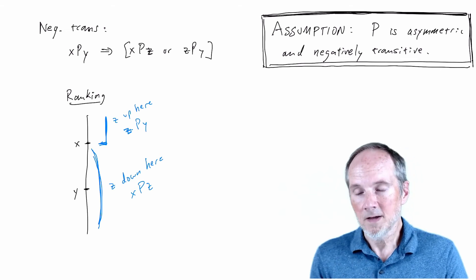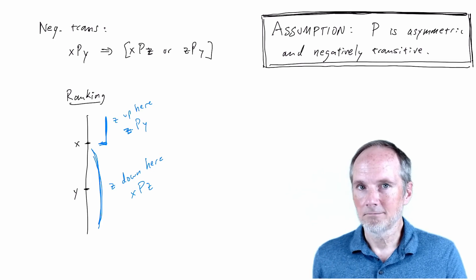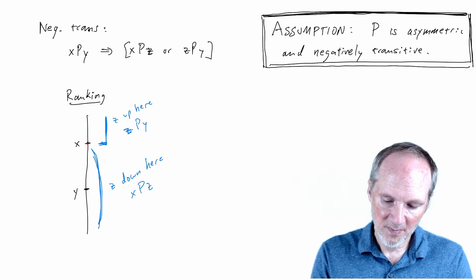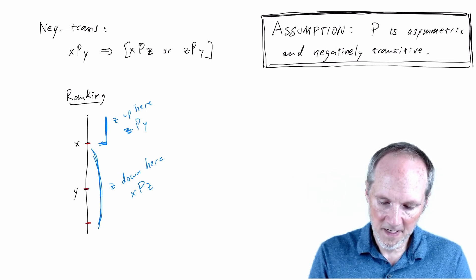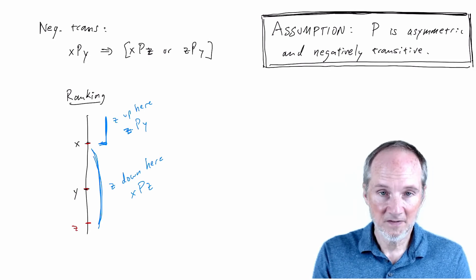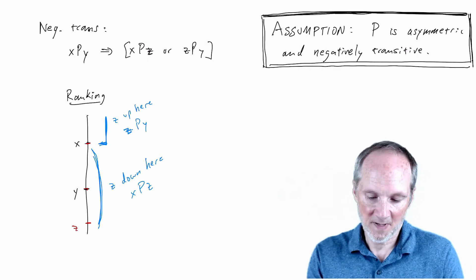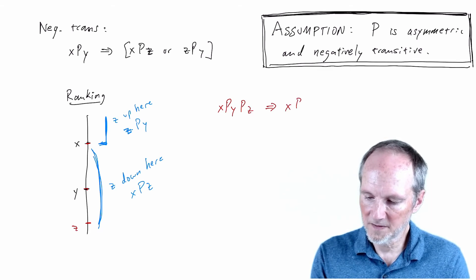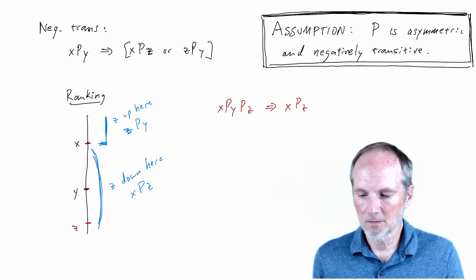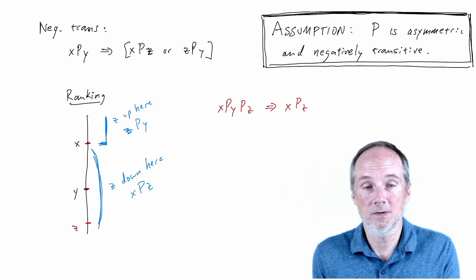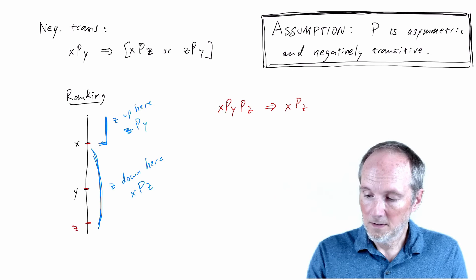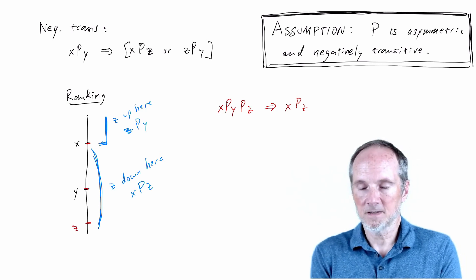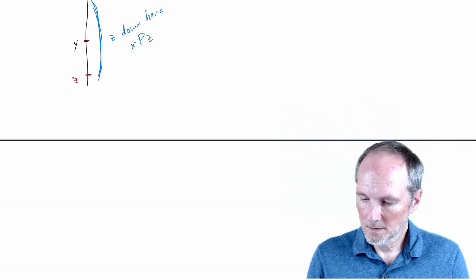You might be thinking: transitivity seems like a completely compelling property on its own. If x is above y and y is above z, clearly x is above z. So transitivity is something we want to assume too. It turns out that transitivity is redundant because it's actually implied by the conjunction of the first two properties. So if a strict preference relation is asymmetric and negatively transitive, then it's transitive. Let's prove that, and then that'll be the end of this installment. I'll call this a proposition: if P is asymmetric and negatively transitive, then it's transitive.